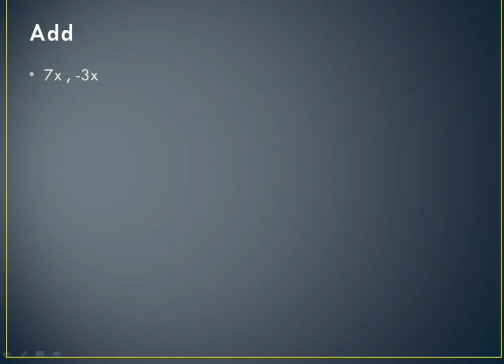Now they are like terms, as you can see, so we will add them and consider their signs also. We get 7x minus 3x, and you know that is 4x. Now one more question: 5x squared minus 9x squared.